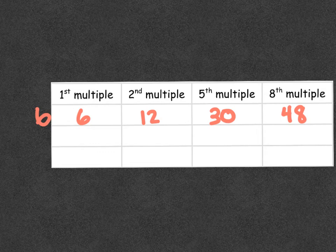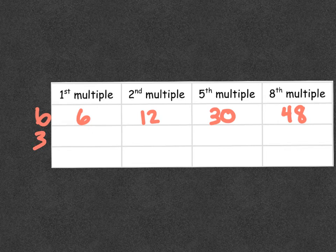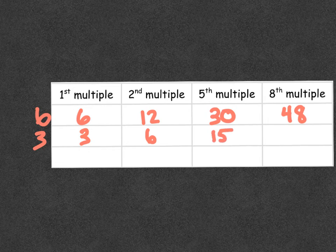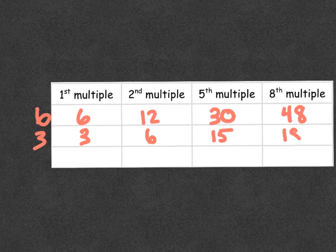So sometimes it'll ask something like that, but if you don't want to list them, you are welcome to use your multiplication facts. So in this case, if we do the number three, three times one is three, three times two is six, three times five for our fifth multiple would be fifteen, three times eight for our eighth multiple is eighteen.